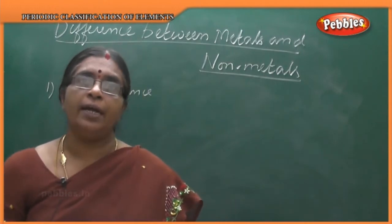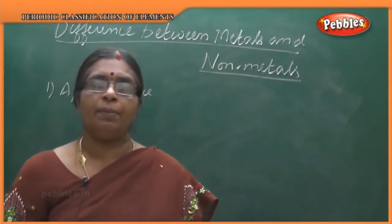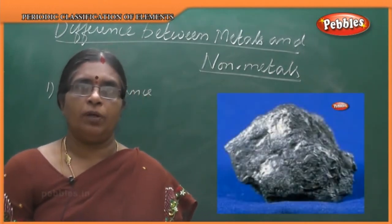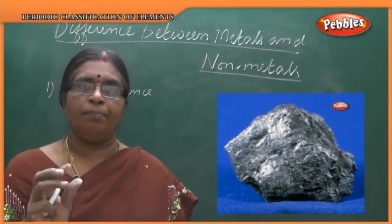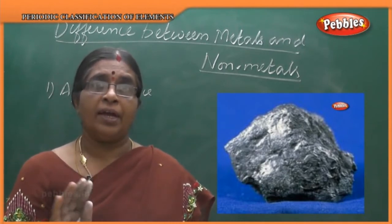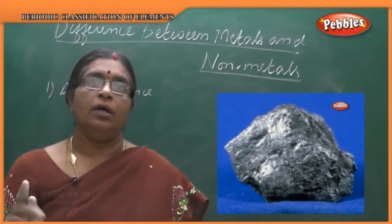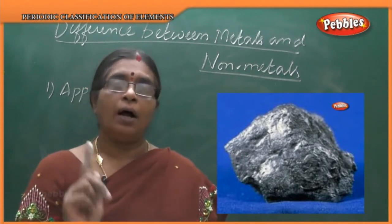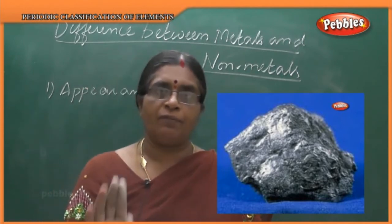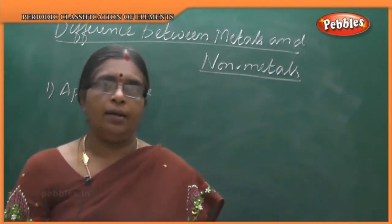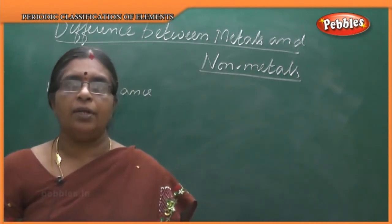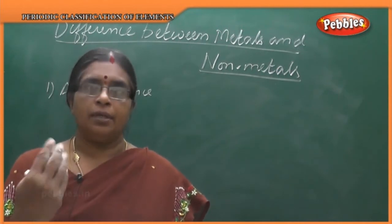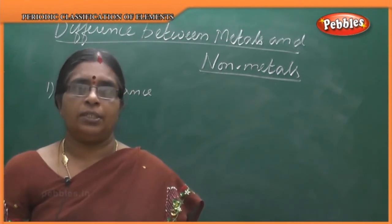Whereas non-metals are very dull — they do not have a shining appearance. The exception is graphite, which is greyish-black and shining. So for non-metals, appearance is dull with no luster. Luster means shining appearance.